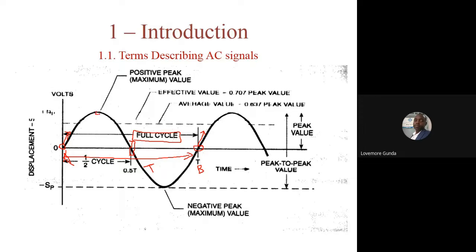There are two important points on our waveform: the positive peak and the negative peak. The distance between the positive peak and the negative peak is what we call the peak-to-peak value. The peak value is measured from zero and is also the amplitude of our waveform. There is also the effective value, or root mean square value — the RMS — which is a DC value that produces the same power as the AC signal; we will explain that in detail shortly.